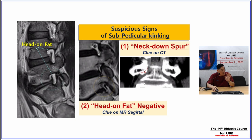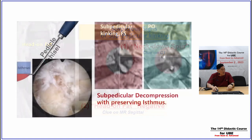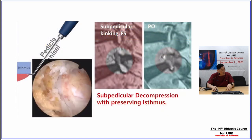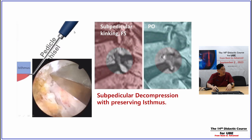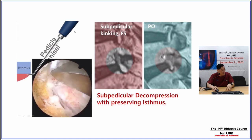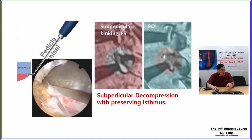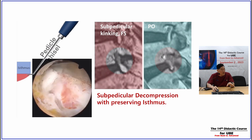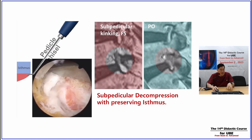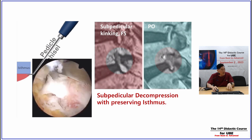Then the nerve root should run under the pedicle but there is very little space. One reason is an end plate spur; another is subpedicular cortical thickening, so the nerve root can be impinged under the subpedicular area. When checking CT and MRI and I suspect it looks a little narrow, I perform subpedicular decompression using a pedicle chisel — an anteriorly 45-degree bending chisel — to restrict the subpedicular area. The cortical thickening can be excised, and I can make one or two millimeters more space for the nerve root.